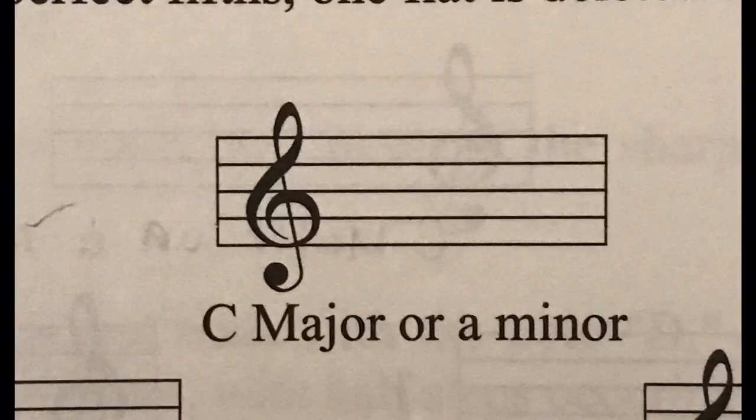Many major key signatures have relative minors. The relative minor is found by going down three half steps from the name of the major key. Skip one letter between the names of the key. For example, C major or A minor.